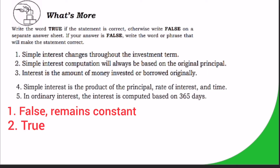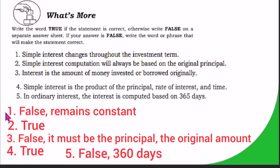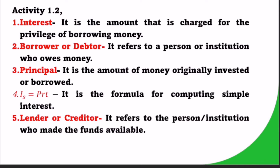Number 3: Interest is the amount of money invested or borrowed originally — FALSE; it must be the principal that is the original amount. Number 4: Simple interest is the product of the principal, rate of interest, and time — TRUE. Number 5: In ordinary interest, the interest is computed based on 365 days — FALSE; it is based on 360 days.